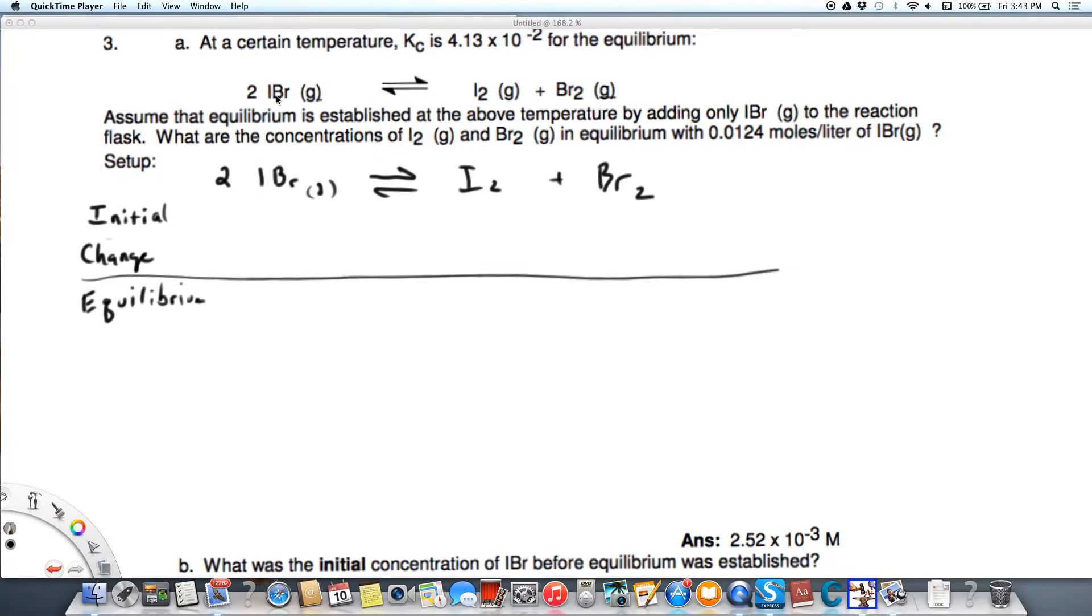Here we have a reaction in which iodine monobromide becomes I2 and Br2. We're going to assume that the equilibrium is established, and the only way it's started is by adding the IBr.